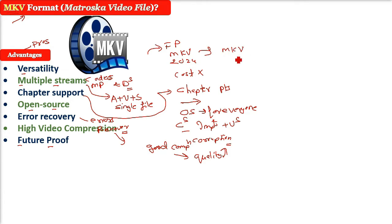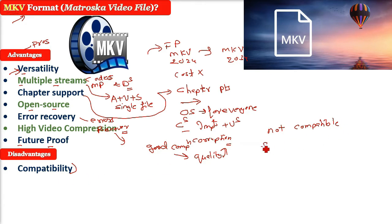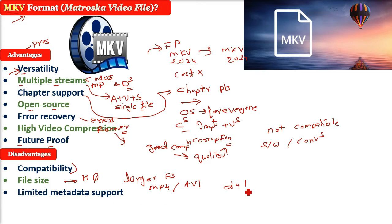What are the disadvantages of MKV? First is compatibility: despite its versatility, MKV is not universally supported by all devices and media players, which can sometimes require additional software or conversion. Then comes file size: high quality video and audio in MKV files can result in larger file sizes compared to other formats like MP4 or AVI. It also has limited metadata support — MKV does not support extensive metadata as some other formats, which can make it less desirable for certain applications.